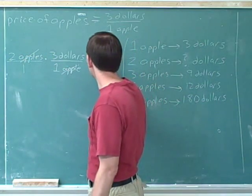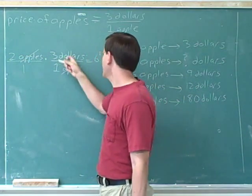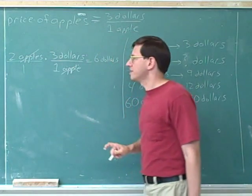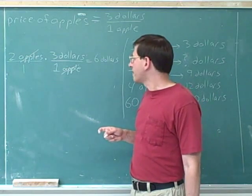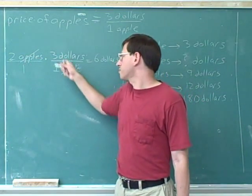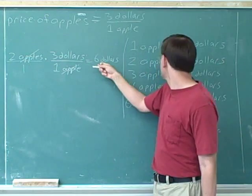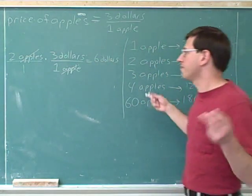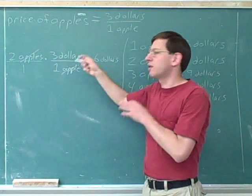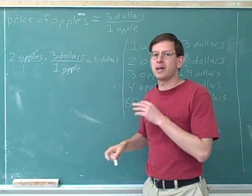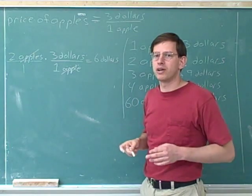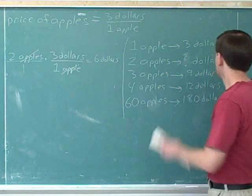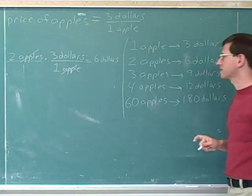And then what do we end up with? We end up with two times three, which is six. And the only unit we have left is dollars. So this is the official way to prove that if you buy two apples at $3 per apple, the total cost will be $6. Of course, that was really totally obvious without doing it on paper like this. But it's important to see how we can do it on paper so that you can do these types of calculations with units where our intuition is not as strong. So now we've confirmed that this really would be $6.